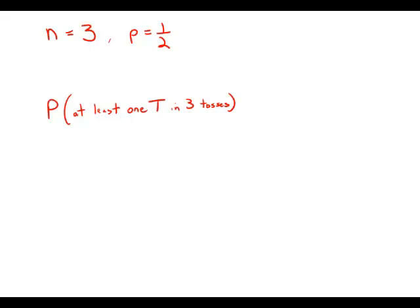The probability is one half that a certain coin will turn up heads on any given toss. If the coin is to be tossed three times, what is the probability that on at least one of the tosses the coin will turn up tails?